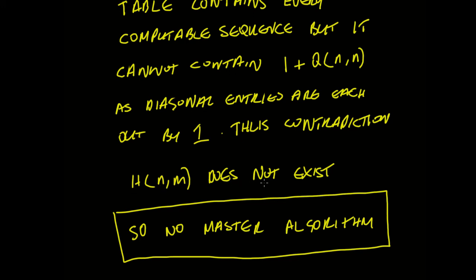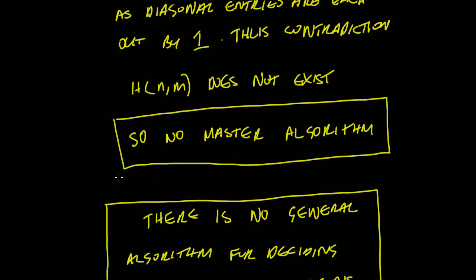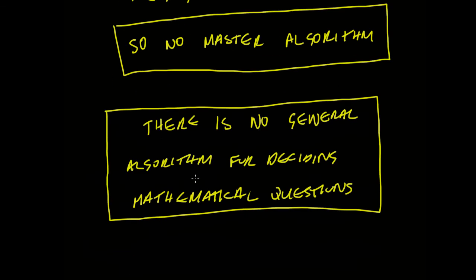In effect, we're saying we can't tell whether an algorithm is going to halt or not, so we can't create a master algorithm. There is no general algorithm for deciding mathematical questions. That's all about the mathematics of algorithms — I added it in because I thought it would be an interesting start.